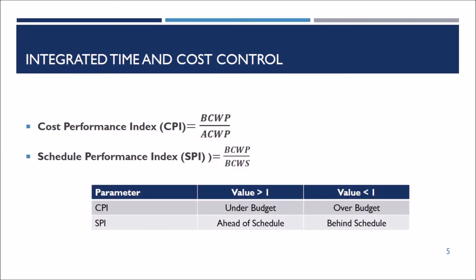To measure the efficiency of expenses spent on a project, the cost performance index (CPI) is calculated, which is the ratio of earned value over actual costs. The schedule performance index (SPI) is the ratio of earned value to planned value. If the SPI is less than 1, it indicates that the project is potentially behind schedule. But if SPI is greater than 1, then the project is ahead of schedule. Similarly, if the CPI is less than 1, then it indicates that the project is potentially over budget, and if CPI is greater than 1, then the project is under budget.